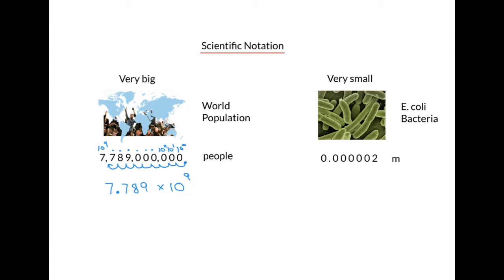Now let's look at the length of an E. coli bacterium, a very small number. We locate the decimal and again we move it over until it's after the first significant digit. So we write the non-zero digits and multiply by a power of ten. And in this case, it would be negative six because we move the decimal over six places to the right.